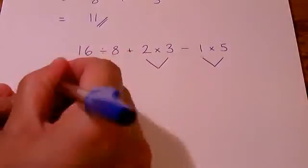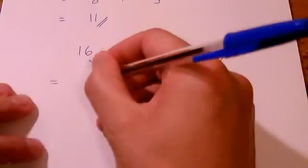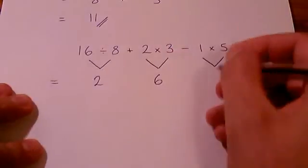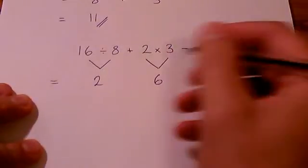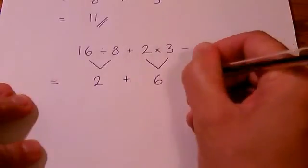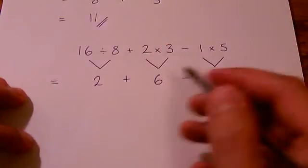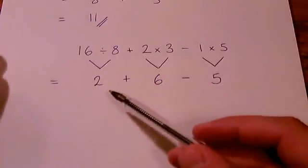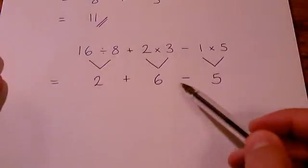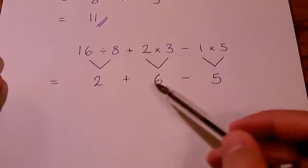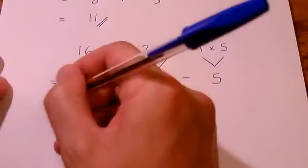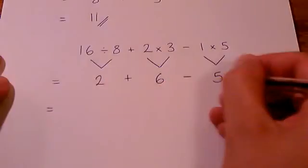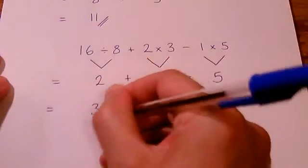So we have 16 divided by 8, which is 2. 2 times 3, which is 6. And 1 times 5, which is 5. Keep the symbols in between the same. And now you can do your adding and subtracting. And for your adding and subtracting section, you should just do that from left to right. So we read left to right, 2 plus 6 minus 5. 2 plus 6 is 8, minus 5 gives us the answer 3.